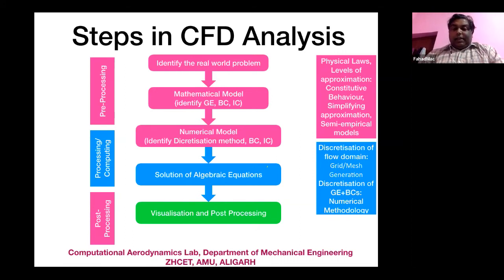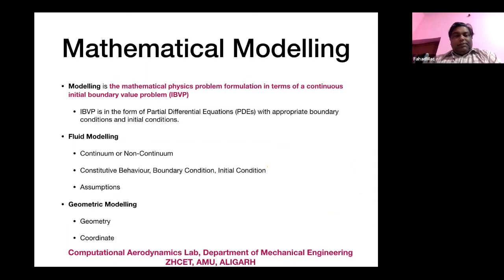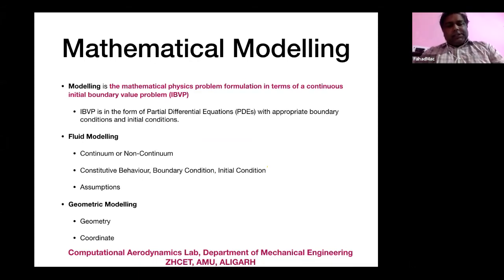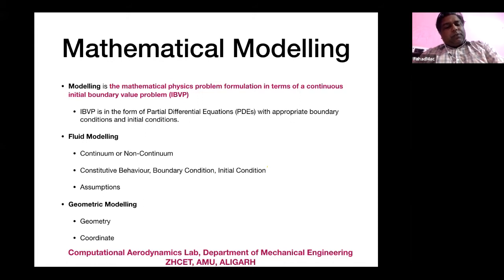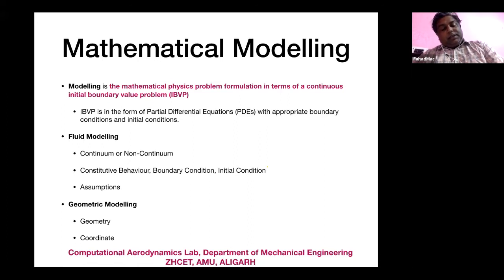A variety of software is available for post-processing and a variety of schemes for processing. In mathematical modeling, the problem reduces to an Initial Boundary Value Problem (IBVP) — a partial differential equation with appropriate boundary and initial conditions. Mathematical modeling consists of two parts: fluid modeling, where you decide the continuum or non-continuum approach, constitutive behavior, boundary and initial conditions, and assumptions; and geometric modeling, where you address the geometry and coordinate system.